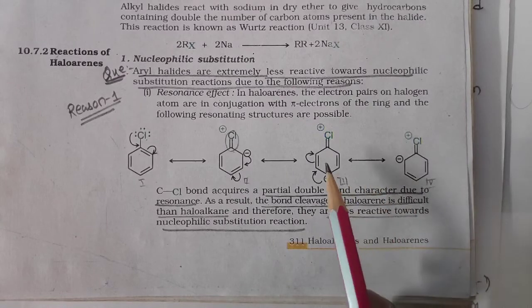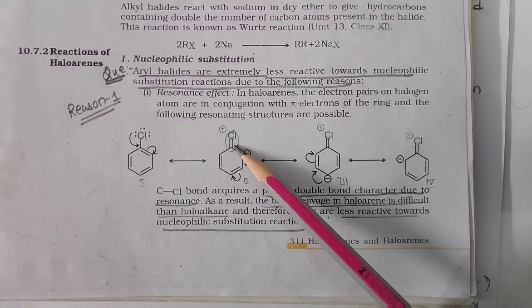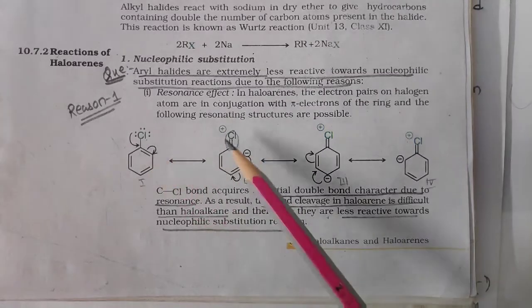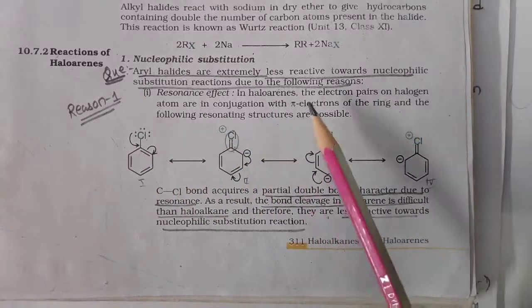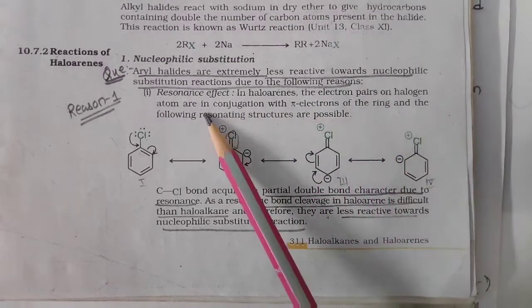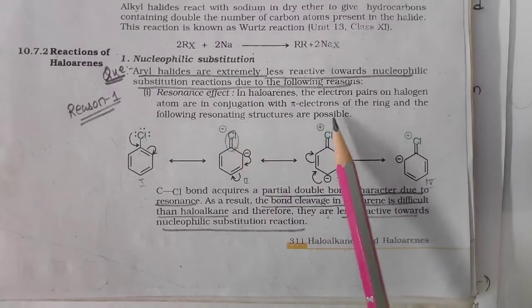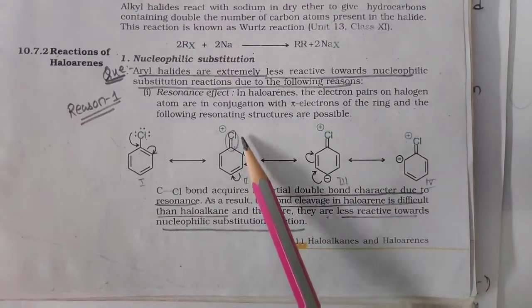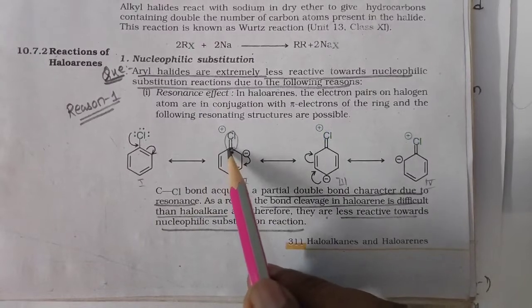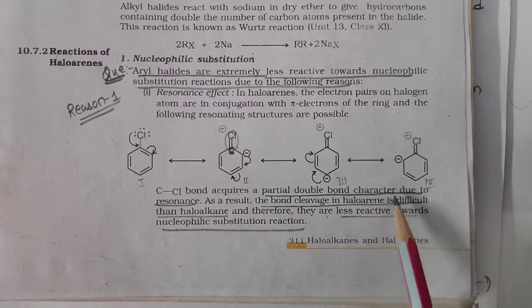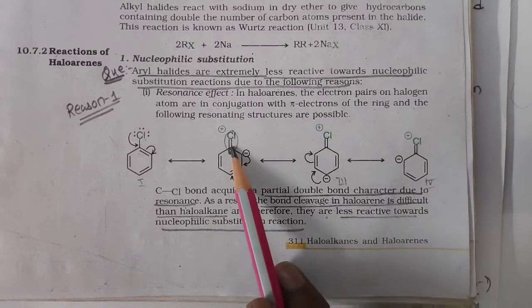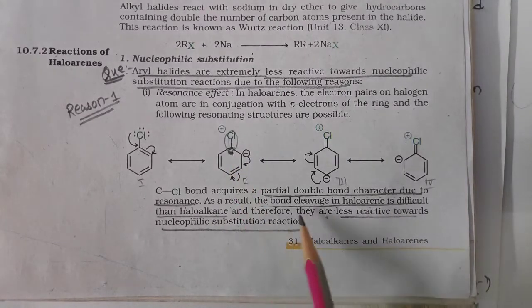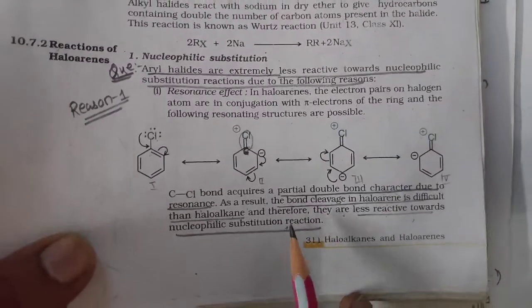Due to resonance, a double bond is formed and we know that a double bond is shorter than a single bond. Shorter bond length means a stronger bond. In haloarenes, the electron pair on the halogen atom is in conjugation with the pi electrons of the ring. The C–Cl bond acquires partial double bond character due to resonance, making bond cleavage difficult, and therefore haloarenes are less reactive towards nucleophilic substitution reaction.